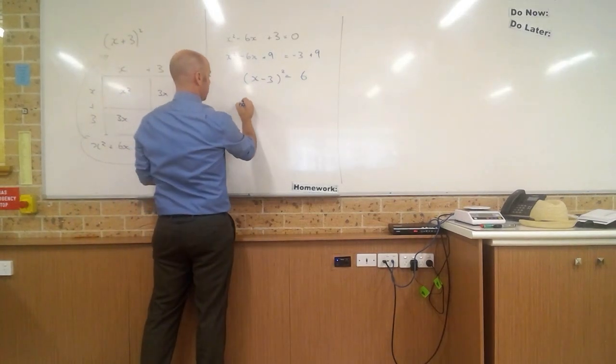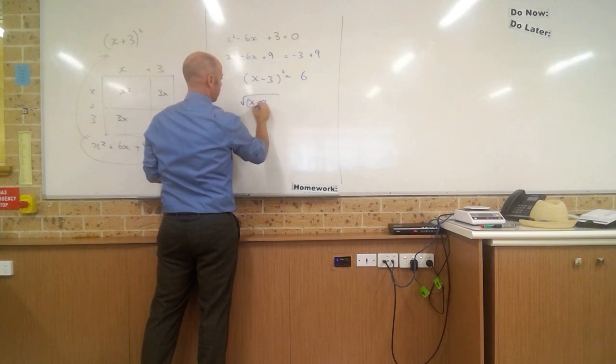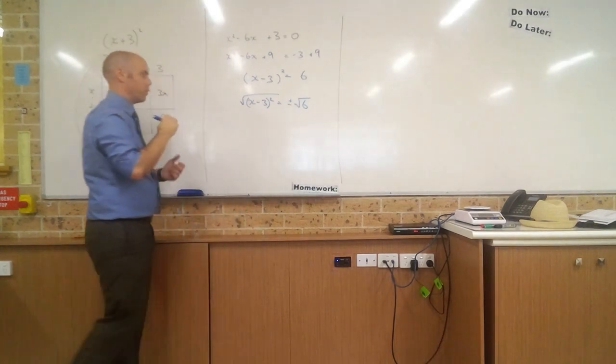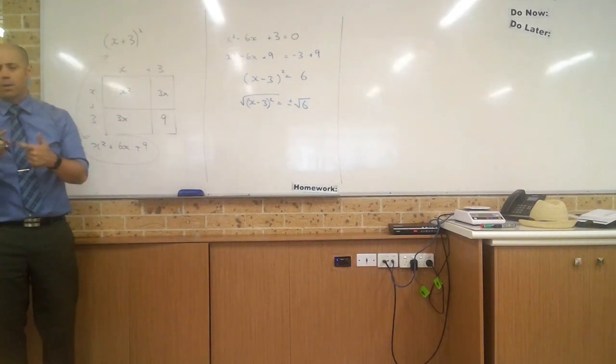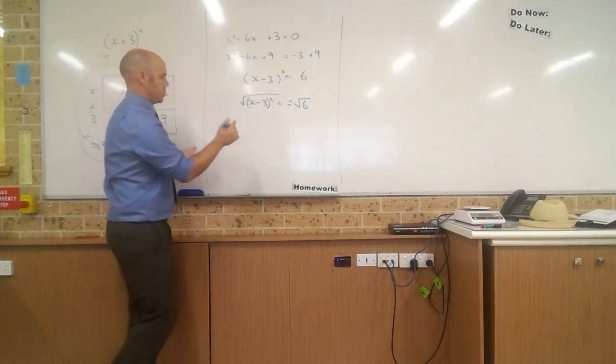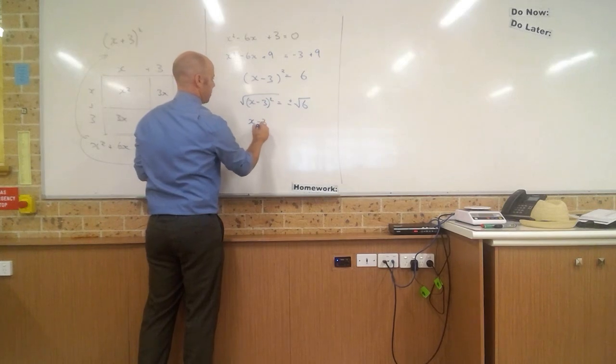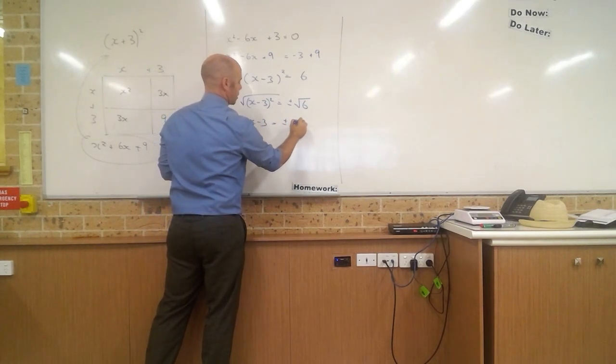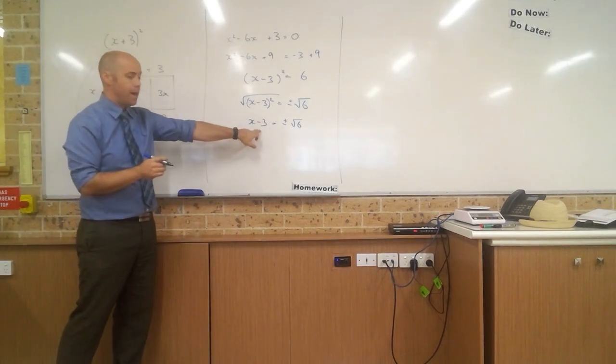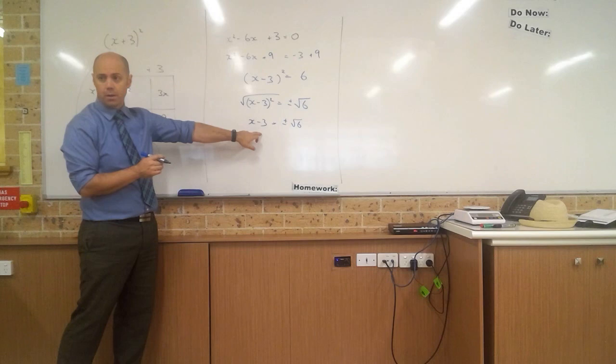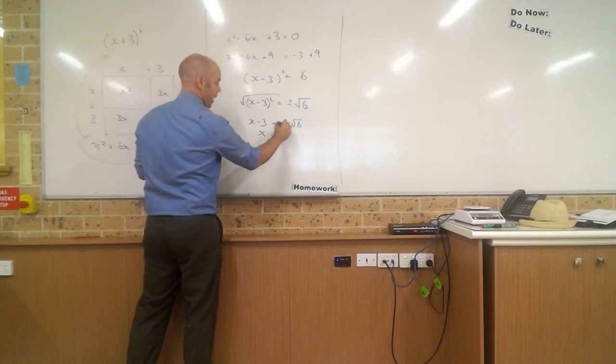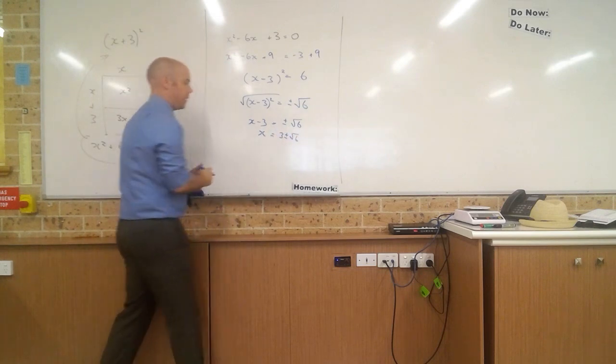I take the square root of both sides. Remember, when we take the square root of both sides, we've got to account for both the positive and the negative. Square root of a squared thing just cancels it out. It's x minus 3 equals plus or minus root 6. I can't do anything to that. That's what it is. We're not quite there yet. We've just got x minus 3. How do I get rid of the minus 3 on this side? Jacob? That's it. Yep, adding 3 to both sides. Get rid of it on this side. Adding 3 to this side.